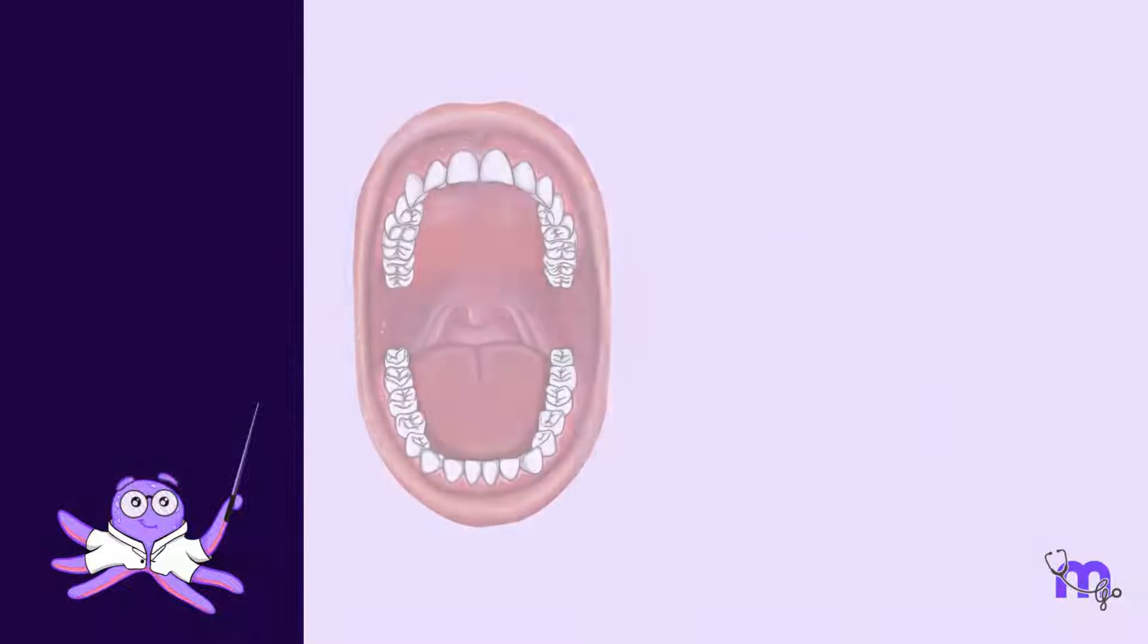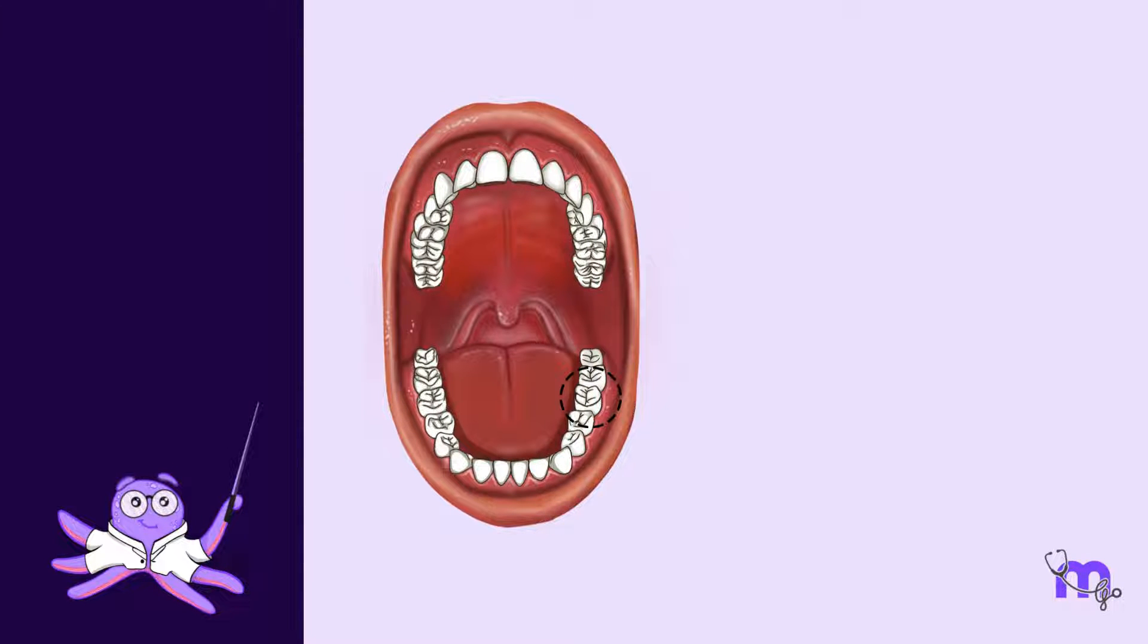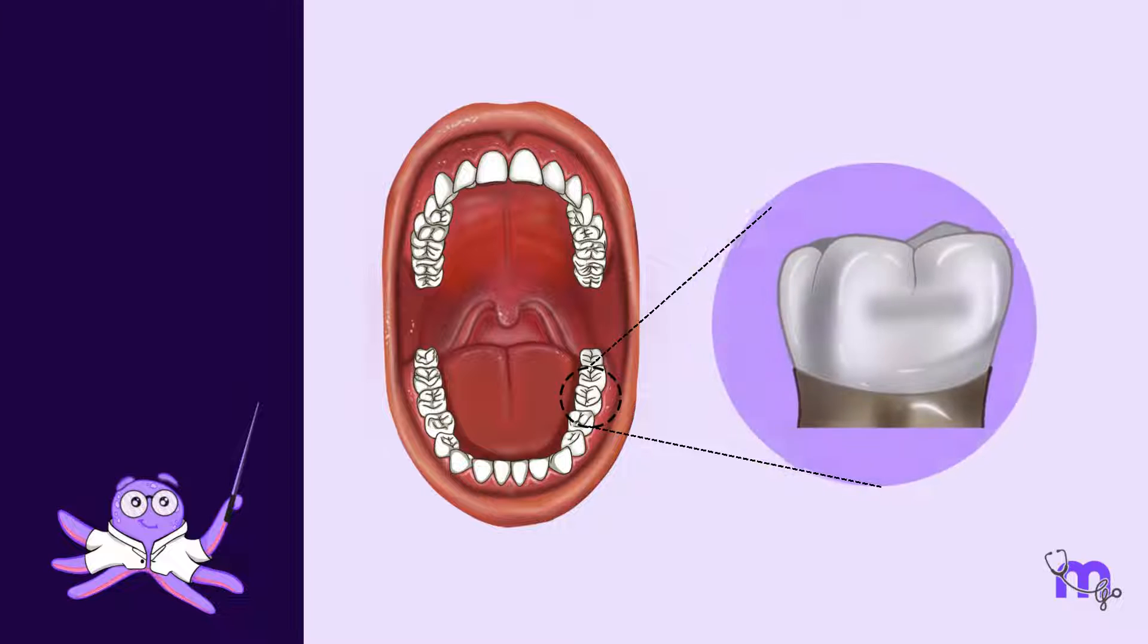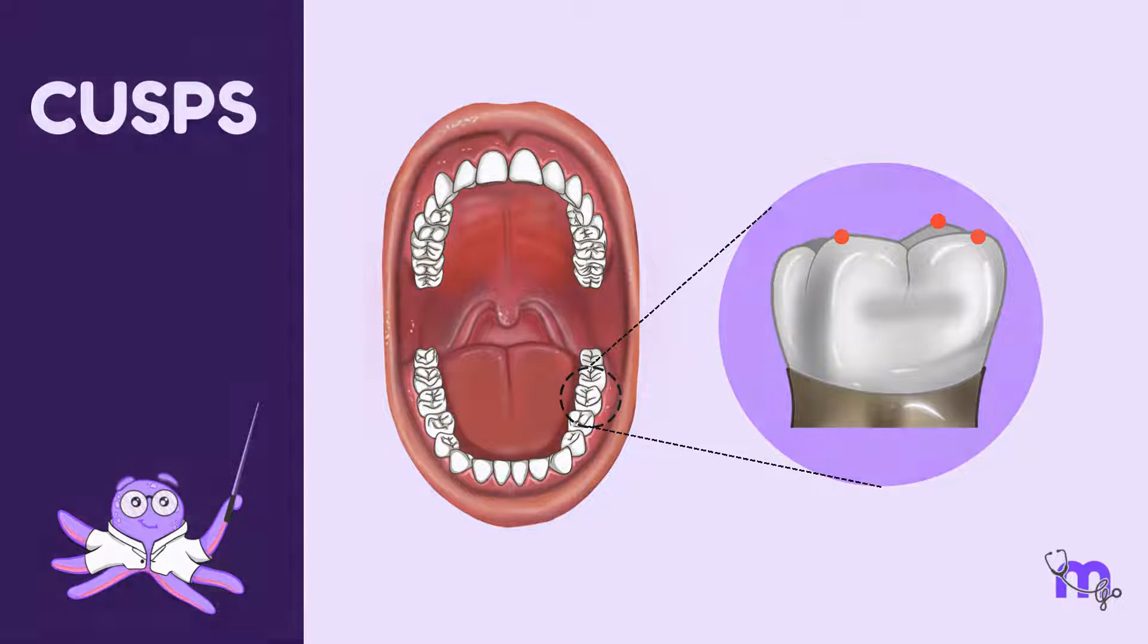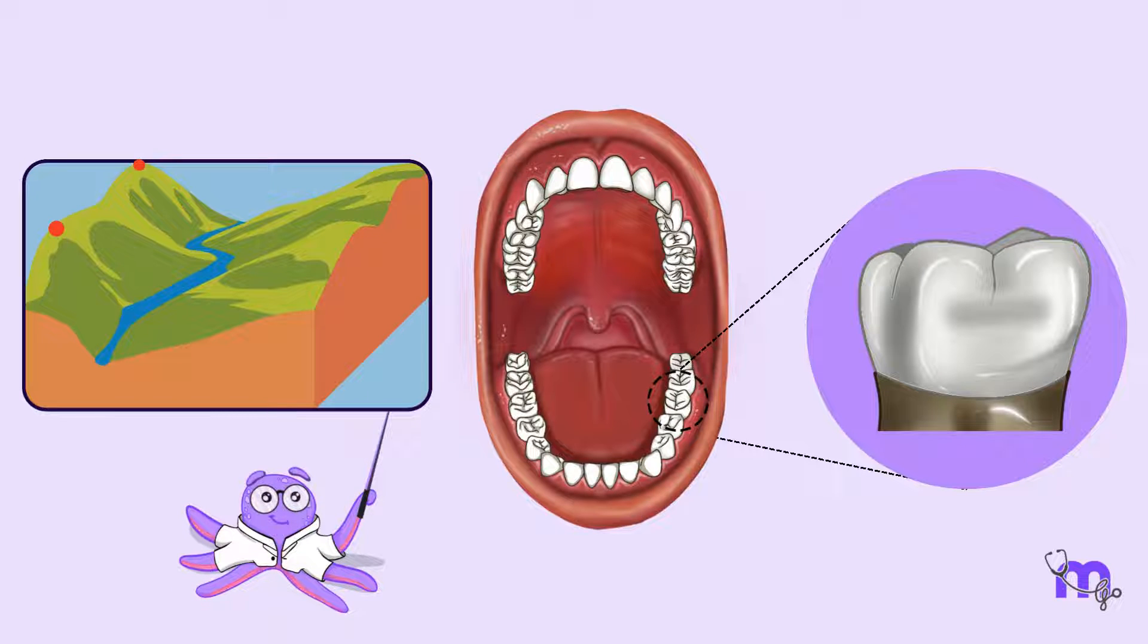First, imagine a molar tooth within your mouth. Focus your attention on the crown of this tooth. Where are its highest points? They are at the cusps. Just as mountains have peaks that reach towards the sky, so does the crown of a tooth feature elevated points called cusps. These cusps are like the mountain's peaks on the tooth's surface, standing tall and distinct from the surrounding terrain.